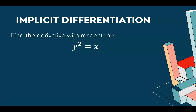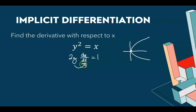Here's a simpler example: y² = x — actually a pretty easy parabola, but it's defined implicitly so it's best to find the derivative implicitly. The derivative of x is 1. The derivative of y² is not just 2y, but 2y times dy/dx by the chain rule. Dividing by 2y gives dy/dx = 1 over 2y.